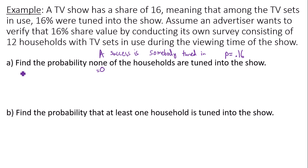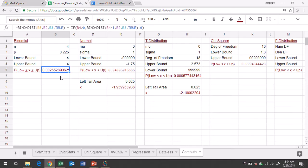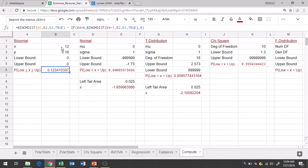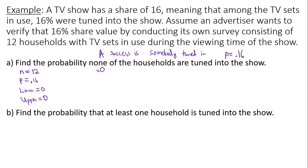To find this binomial probability, the number of trials is 12 because they're going to go to 12 households. The probability of a success is 0.16. Since we're looking at exactly zero people tuned in, the lower and upper bounds are both zero. In Google Sheets, with 12 trials, probability of success 0.16, and lower and upper bounds both zero, we get 0.1234. So the probability that exactly zero households are tuned into the show is 0.1234.